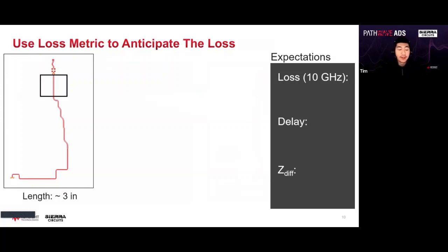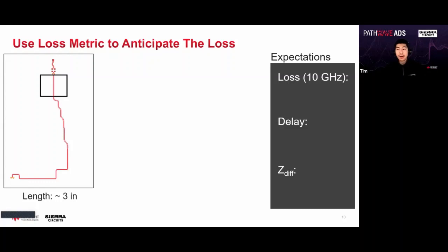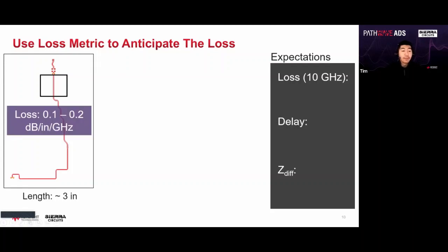First, we need to use loss metrics to anticipate the loss. My advisor always tells me: 'Tim, you have to anticipate before you simulate or push the measurement button — otherwise you're just a technician, not an engineer.' An engineer knows what's going to come out before it does. I measured the trace length at about three inches. The loss metric we're using today is 0.1 to 0.2 dB per inch per gigahertz. Doing a quick calculation: 0.1 multiplied by three inches...